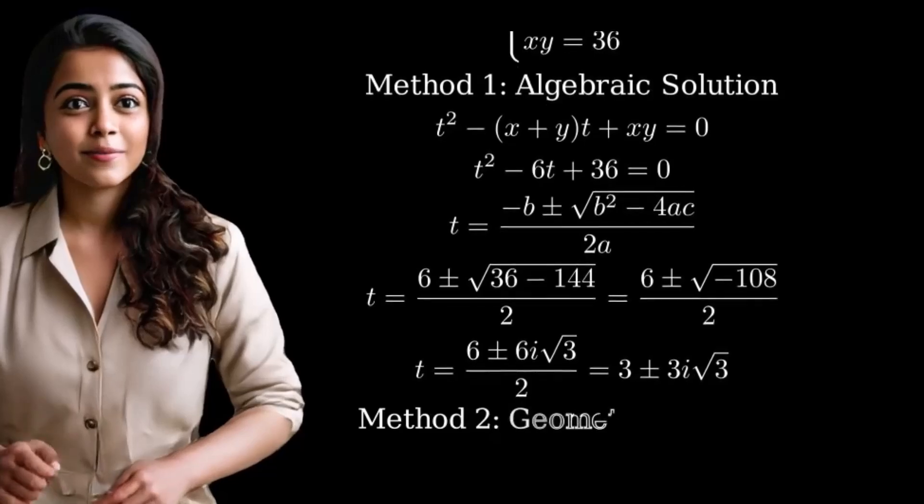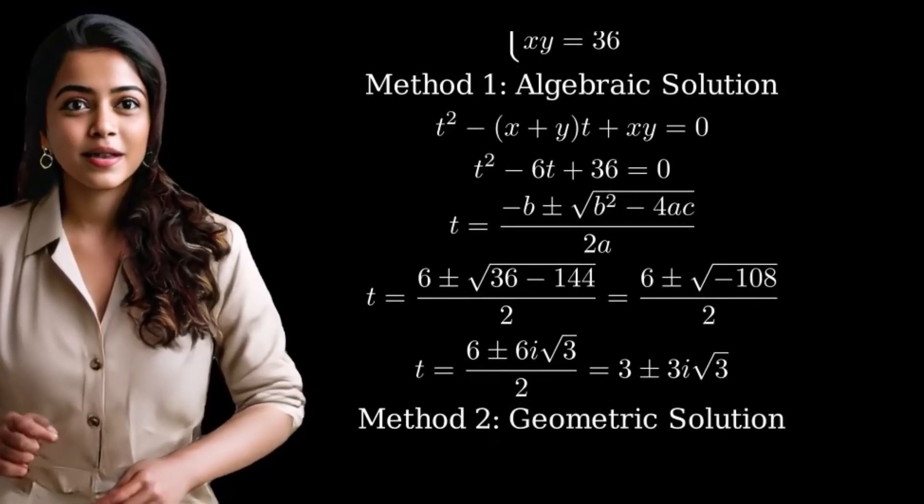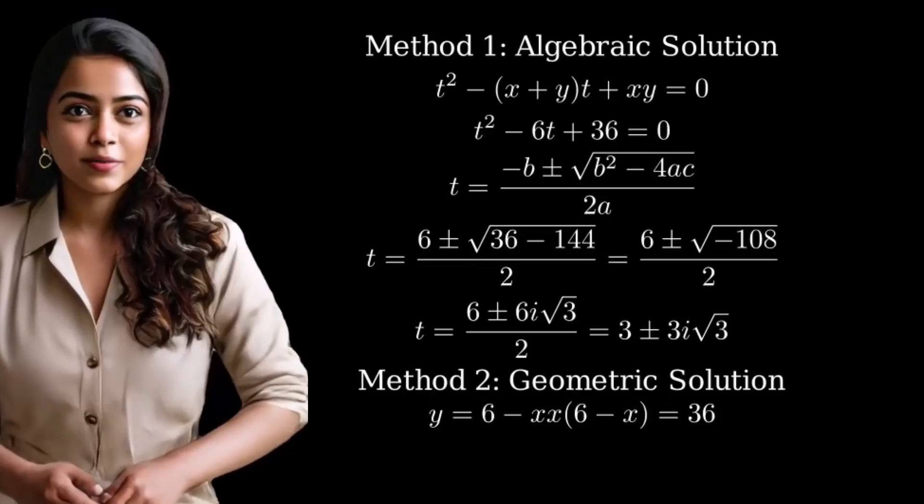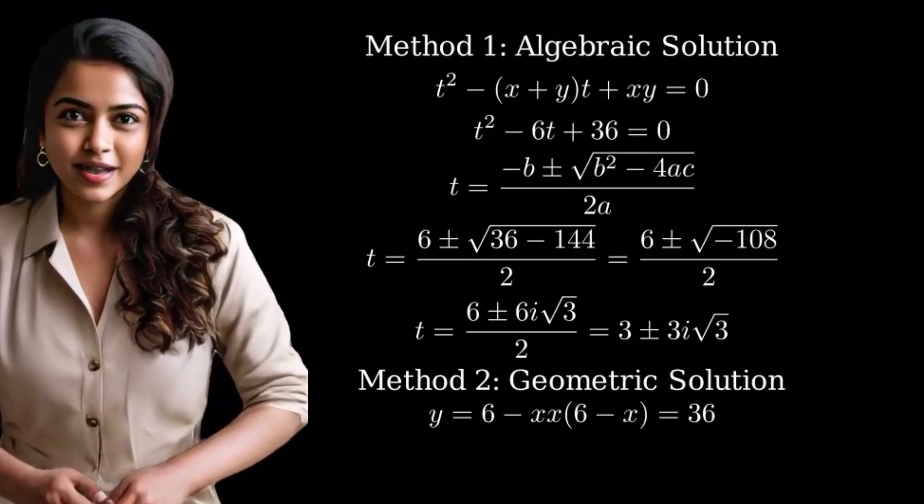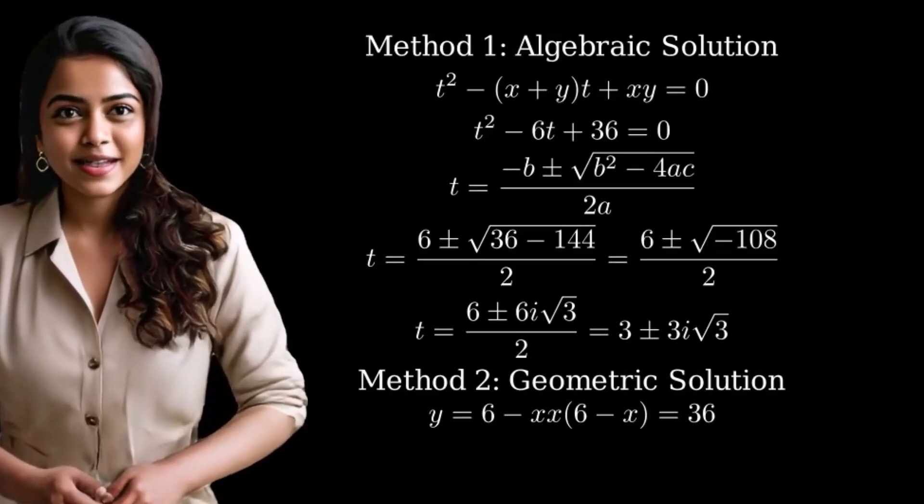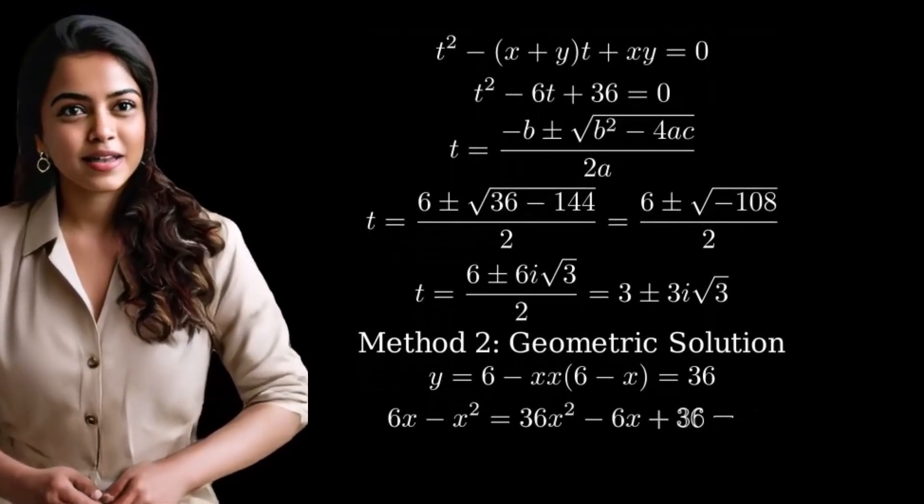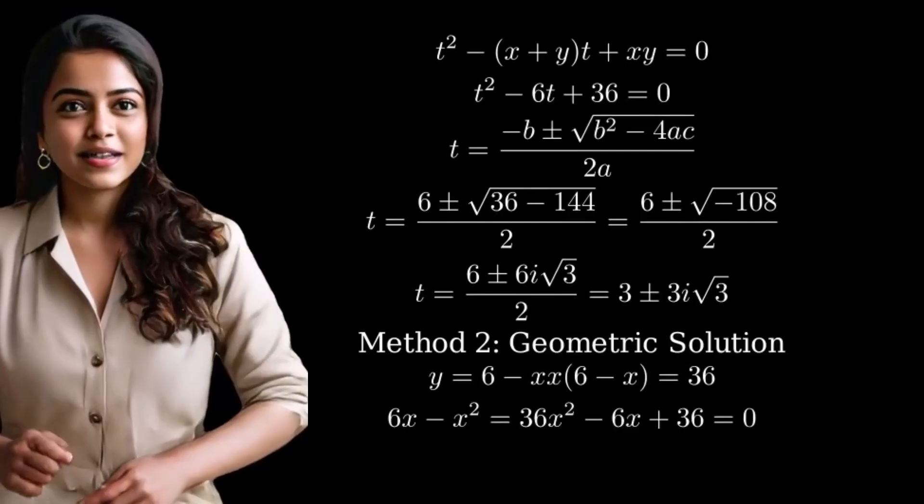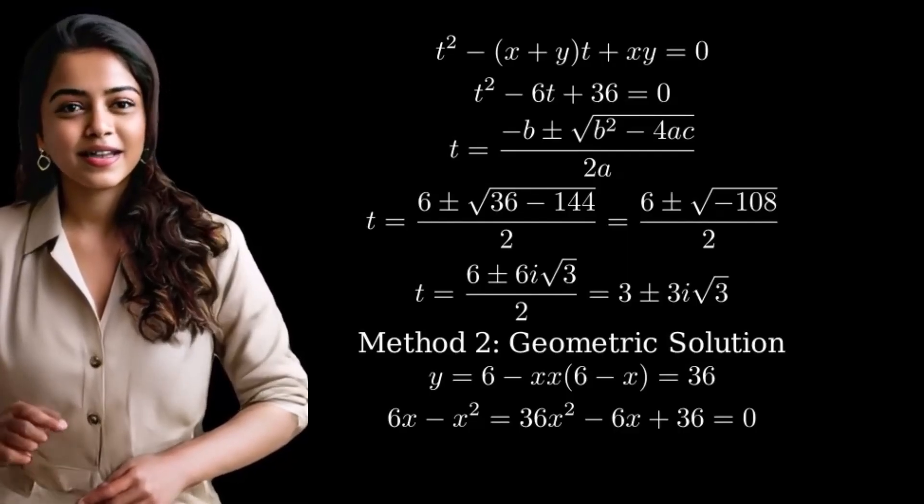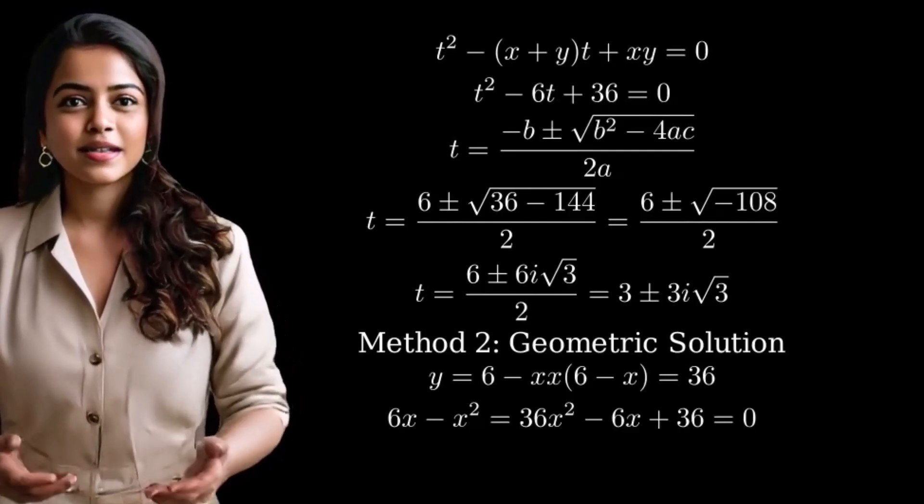Now let's look at method 2, the geometric solution. First, we can rewrite x plus y equals 6 as y equals 6 minus x. Then substitute this into xy equals 36. Expanding this gives us x squared minus 6x plus 36 equals zero, which is the same quadratic we found using method 1.